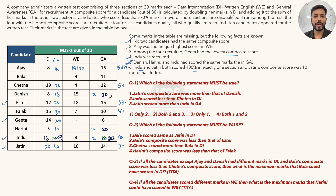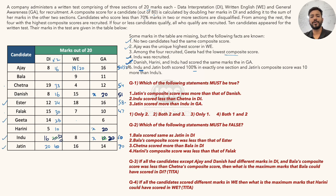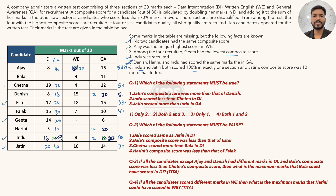Now Danish's complete composite: DI double = 16, WE = 15, GA = 20, total = 16 + 15 + 20 = 51. This is very interesting — we had two possibilities for Ajay: 51 or 52. Since no two composite scores can be the same (statement 1), and Danish = 51, Ajay cannot be 51. Therefore Ajay's WE must be 20 and his composite score is 52.